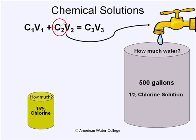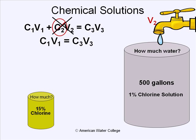Since the water's concentration is zero, that factor has no value in the formula, so we can drop it out and clean up the equation. We'll keep V2 noted by the water so we remember to come back to it. Our simplified formula now reads: concentration times volume of solution 1 equals concentration times volume of solution 3.